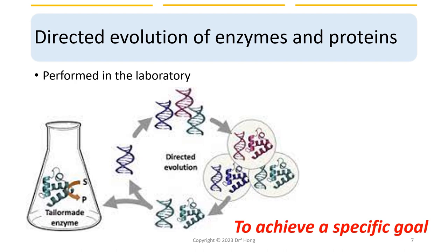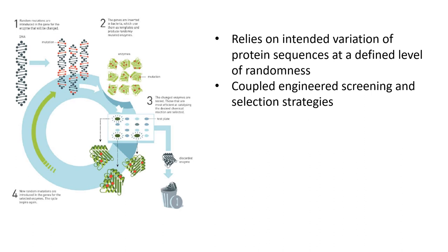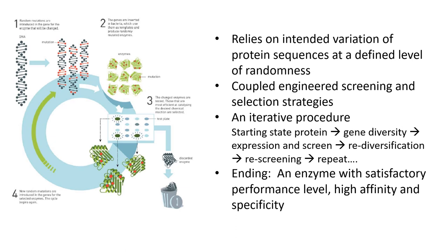Directed evolution of enzymes and proteins is performed in the laboratory, and scientists use this process to speed up the change of enzymes and proteins to achieve a specific goal. During this process, the protein sequence of a given enzyme or protein is designed to have both well-defined fixed regions as well as intended variations of randomness to create different variants that may have the desired functionality. The different versions of proteins and enzymes are subjected to engineered screening and selection strategies, and this selection process is iterative, during which proteins with undesired performance are discarded and the rest are directed to a specific goal.